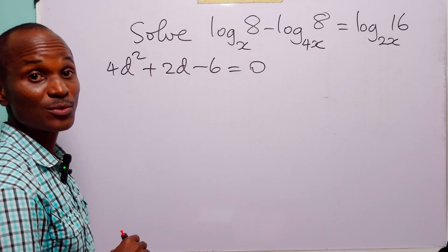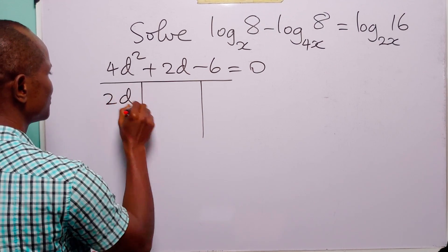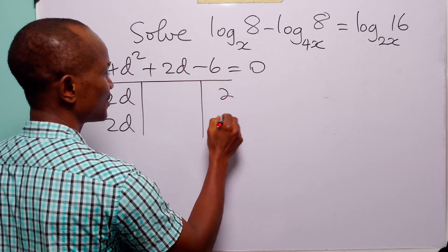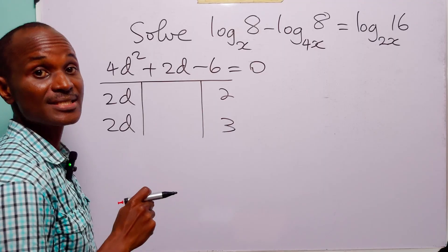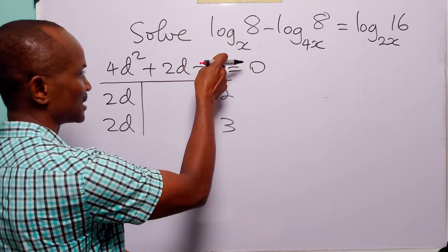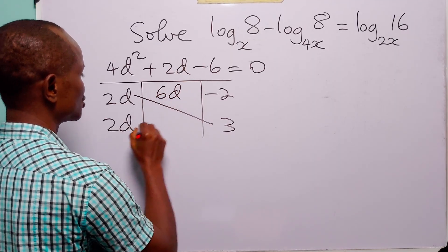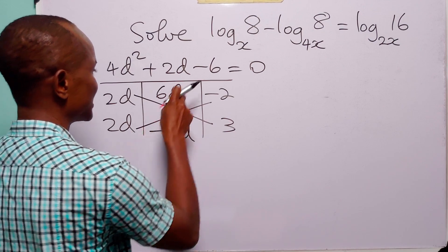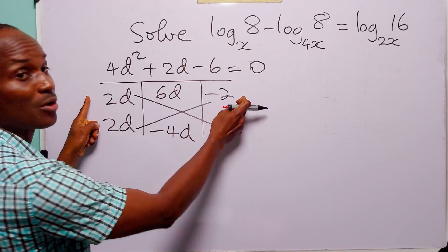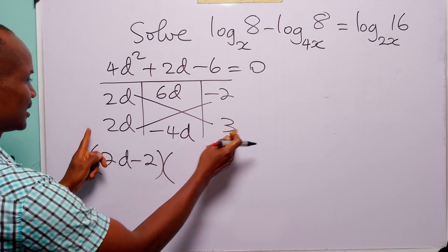We solve this quadratic using the table method. The factors of 4d² are 2d and 2d, and the factors of −6 that work are 3 and −2. Checking: 2d × 3 = 6d and 2d × (−2) = −4d; 6d − 4d = 2d. ✓ So the equation factors as (2d − 2)(2d + 3) = 0.